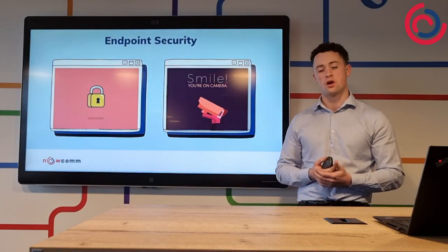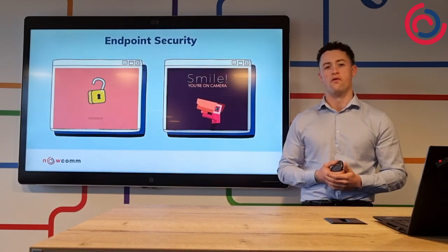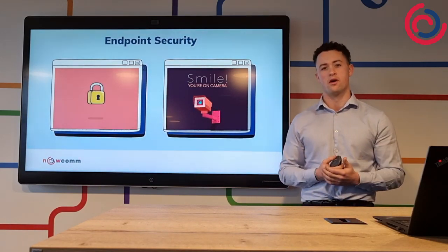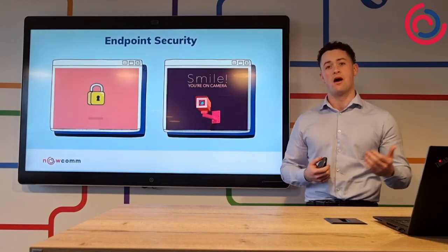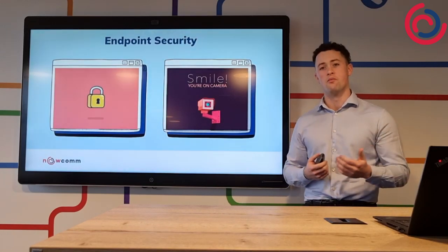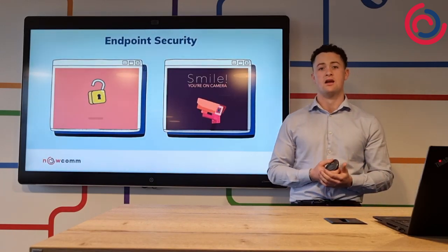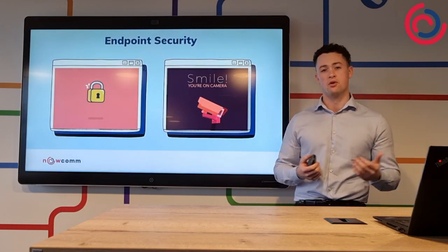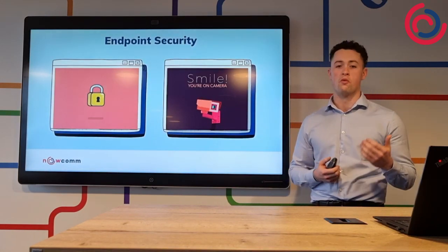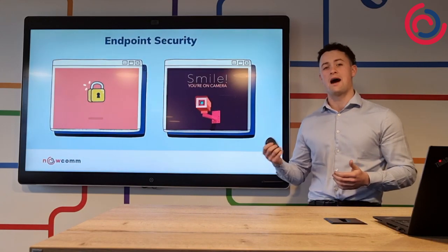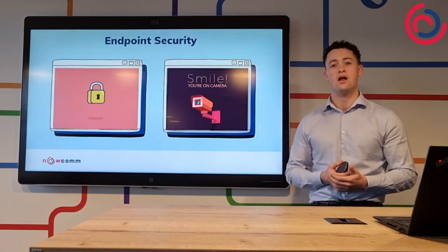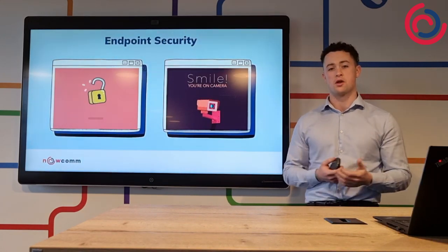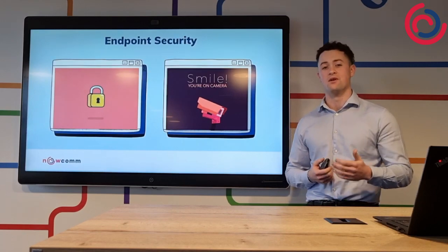Endpoint security, or endpoint protection, refers to all the strategies, practices, and software products used to prevent malware, viruses, data breaches, and all other cyber attacks that might impact your network's endpoints. In simple terms, it's the lock on the door we've been talking about, and also the camera in the corner that can identify threats sooner and stop malicious activity before any harm can be done.